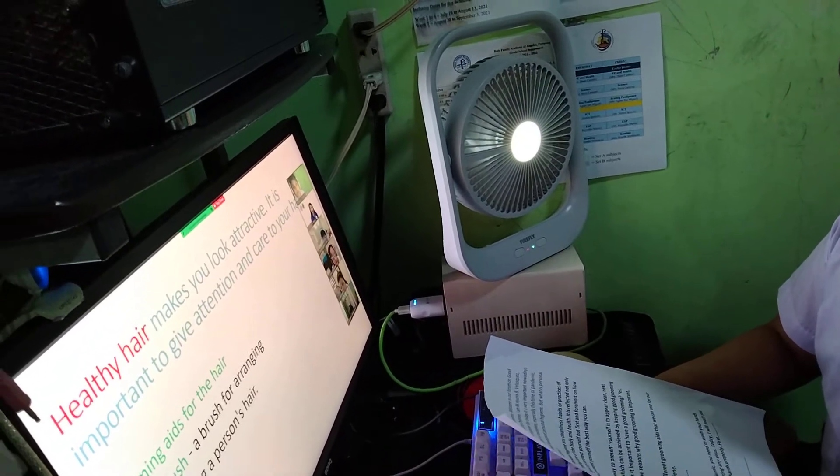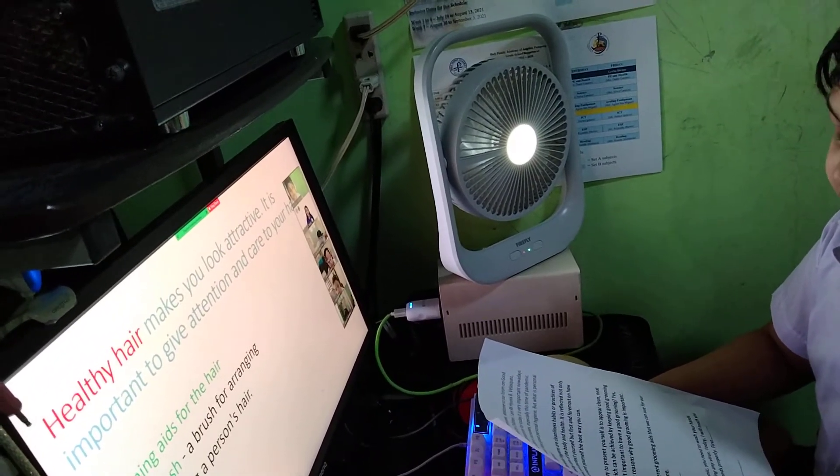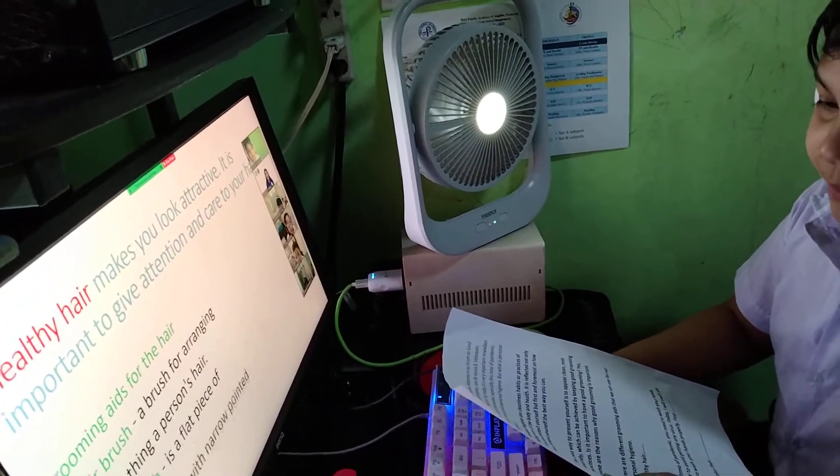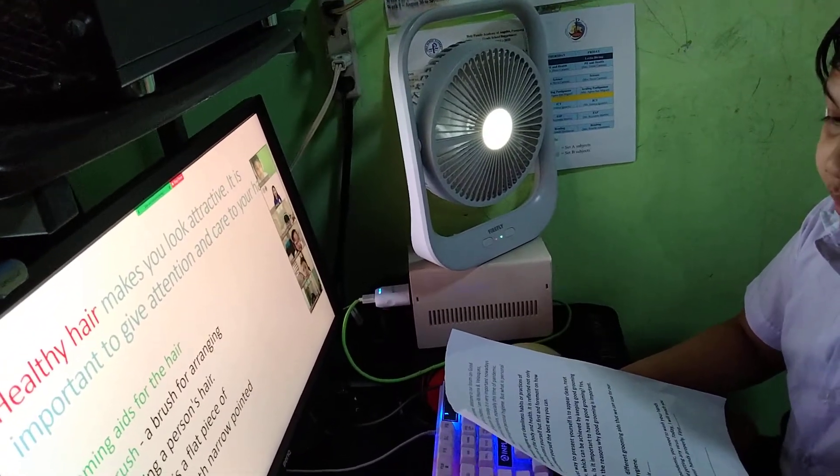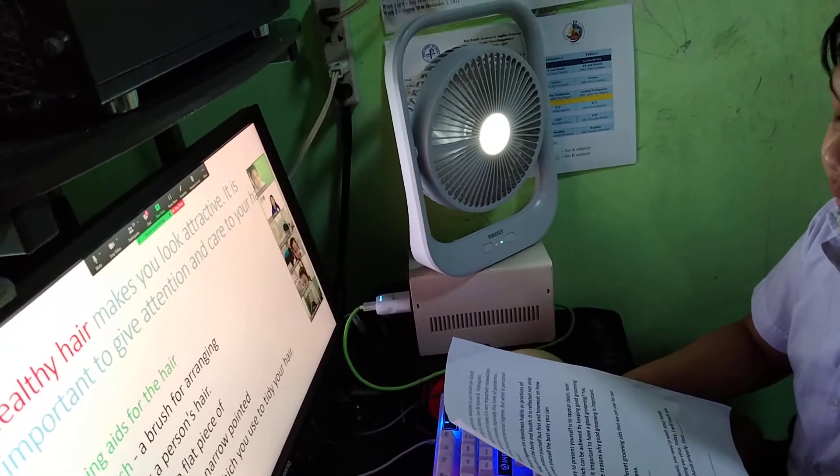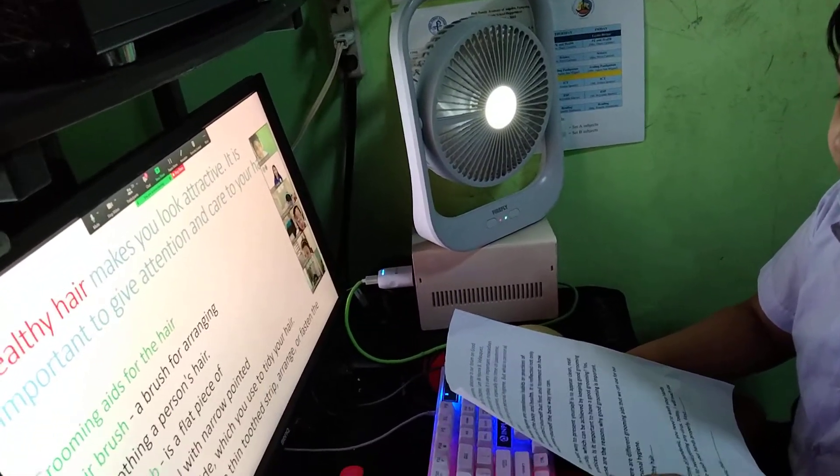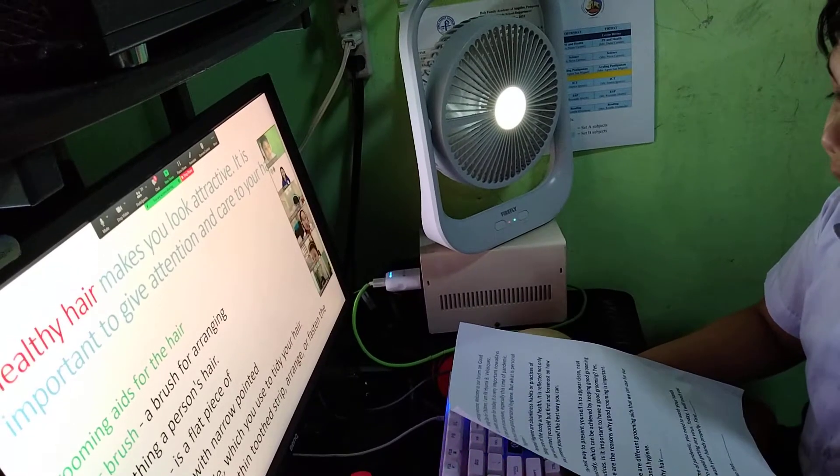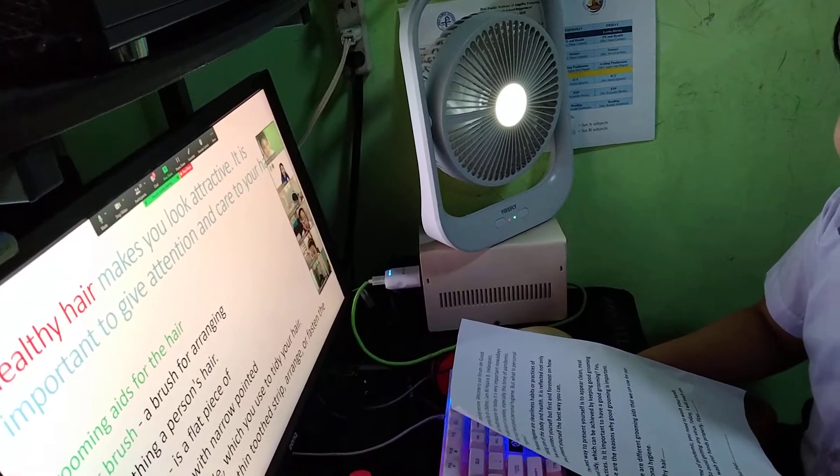Hairbrush: a brush for arranging or smoothing a person's hair. Hair comb: a flat piece of plastic or metal with narrow pointed teeth along one side which you use to tidy your hair. Hair accessories: a thin-toothed strip to arrange or fasten the hair.